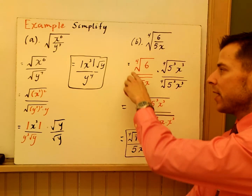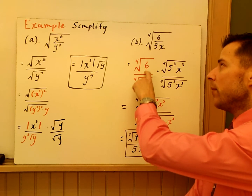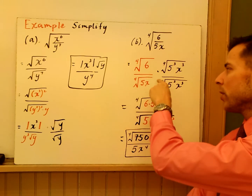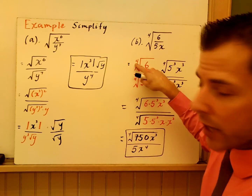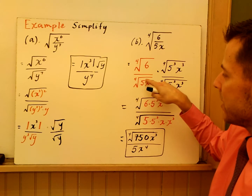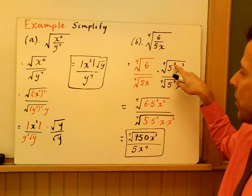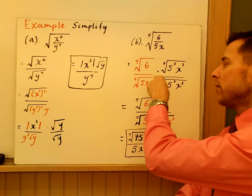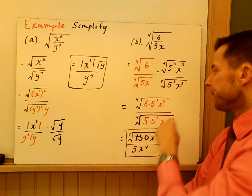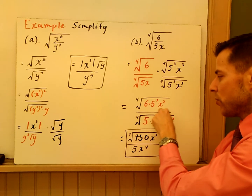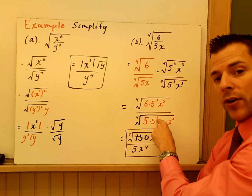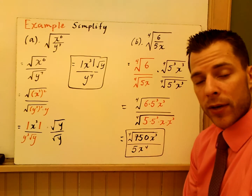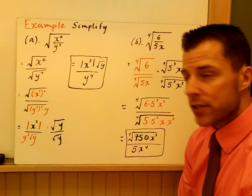Fourth root of 6 over 5x — again applying the quotient rule. You get the fourth root of 6 over the fourth root of 5x. Now we multiply the top and bottom. This is not a square root, so we use the second rule: take the index minus the powers. Four minus one is three, so multiply top and bottom by the fourth root of 5 cubed x cubed. When you multiply across, five to the first times five to the third is five to the fourth, and with a fourth index that comes out. So you can rationalize the denominator and simplify the expression.